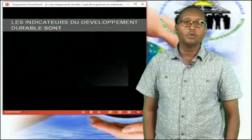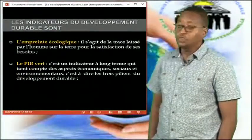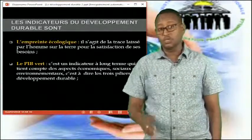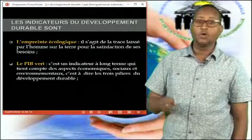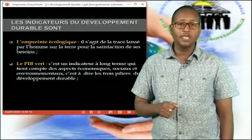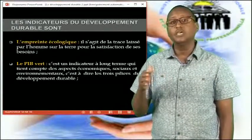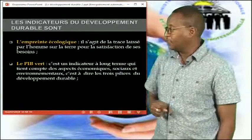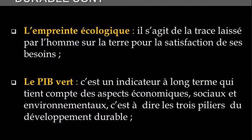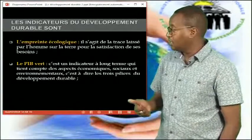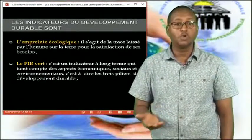Nous verrons maintenant les indicateurs du développement durable. Ils sont au nombre de deux. Il y a l'empreinte écologique, qui consiste à prendre en compte l'impact de la consommation d'une population donnée en calculant la surface de sol et d'océan nécessaire, mais aussi la manière de dissoudre les déchets. Il y a aussi le deuxième indicateur qui est le PIB vert. Le PIB vert est un indicateur à long terme qui reprend les trois piliers vus précédemment, qui sont les aspects économiques, sociaux et environnementaux.